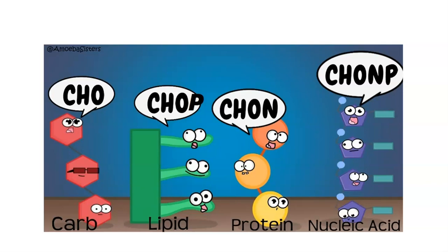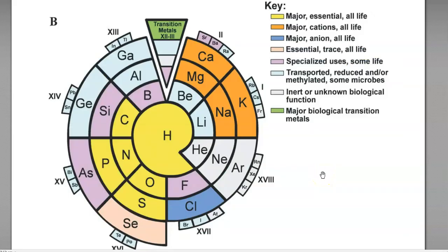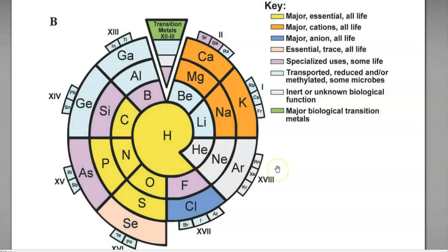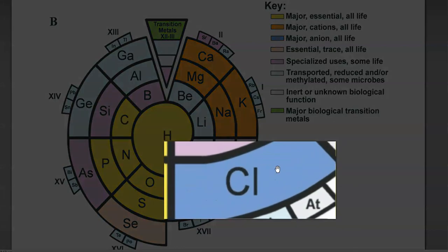Apart from that, phosphorus forms the phosphodiester bond for the nucleic acid. The next list is the major cations required for all life forms, shown in orange color. These include calcium, magnesium, sodium, and potassium. The major anion present in all life forms is only chlorine.